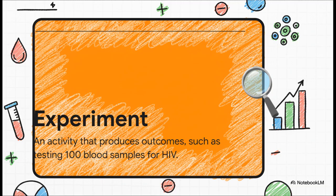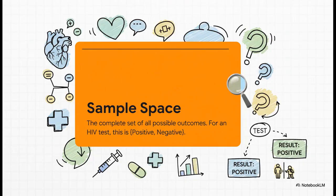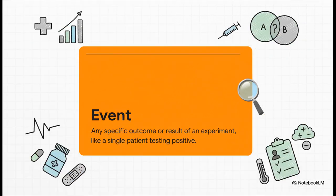It's just the thing you're doing or observing. So, for every experiment, you have what's called a sample space. This is just a fancy term for a list of every single possible thing that could happen. It's the whole universe of potential results. For that HIV test, the sample space is super simple. The result can be positive or it can be negative. That's it. Every possibility is accounted for.